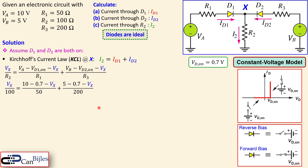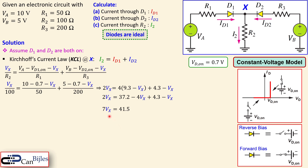Substituting the values: VX over 100 for R2, then VA is 10, minus 0.7, over 50 for R1, and for VB: 5 minus 0.7 minus VX over 200. Multiplying through by 200 gives 2VX equals 4 times (9.3 minus VX) plus (4.3 minus VX). Collecting VX terms on the left and numbers on the right gives 7VX equals 41.5.